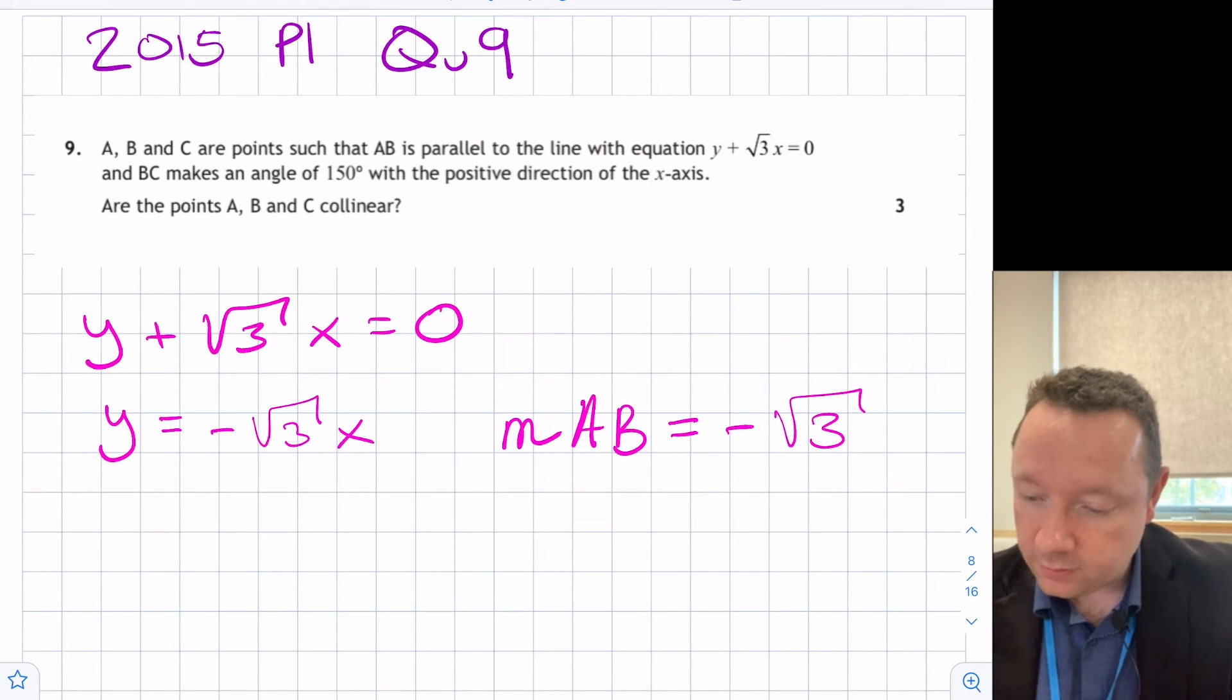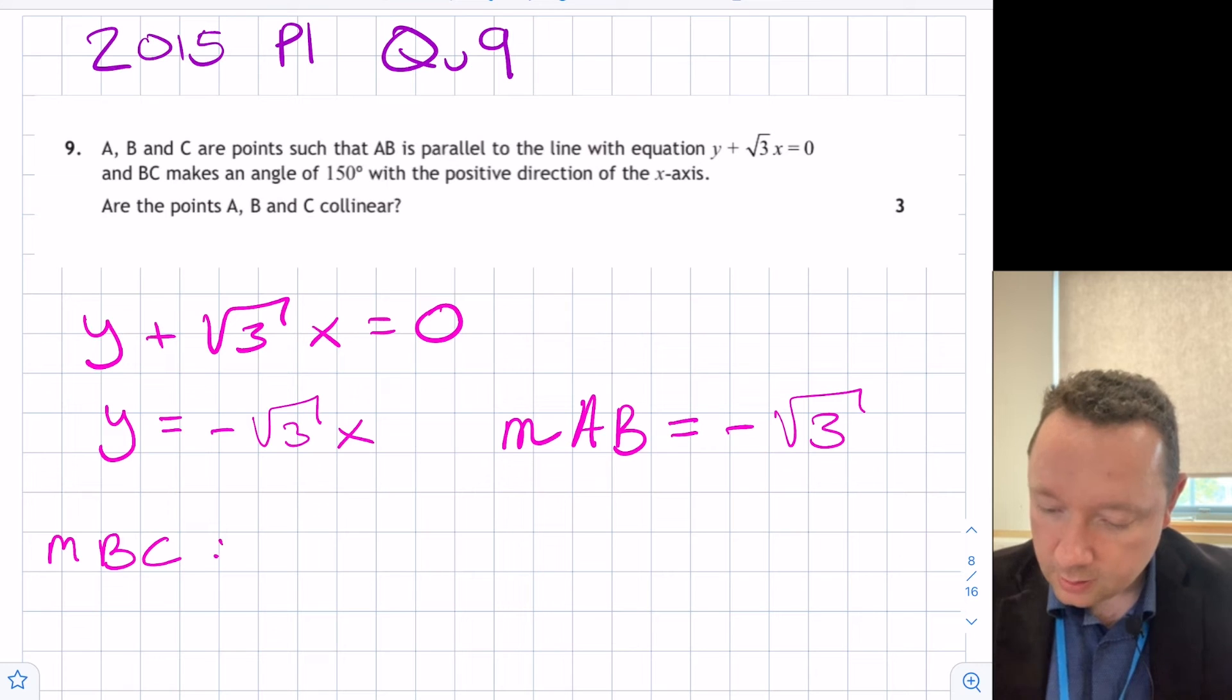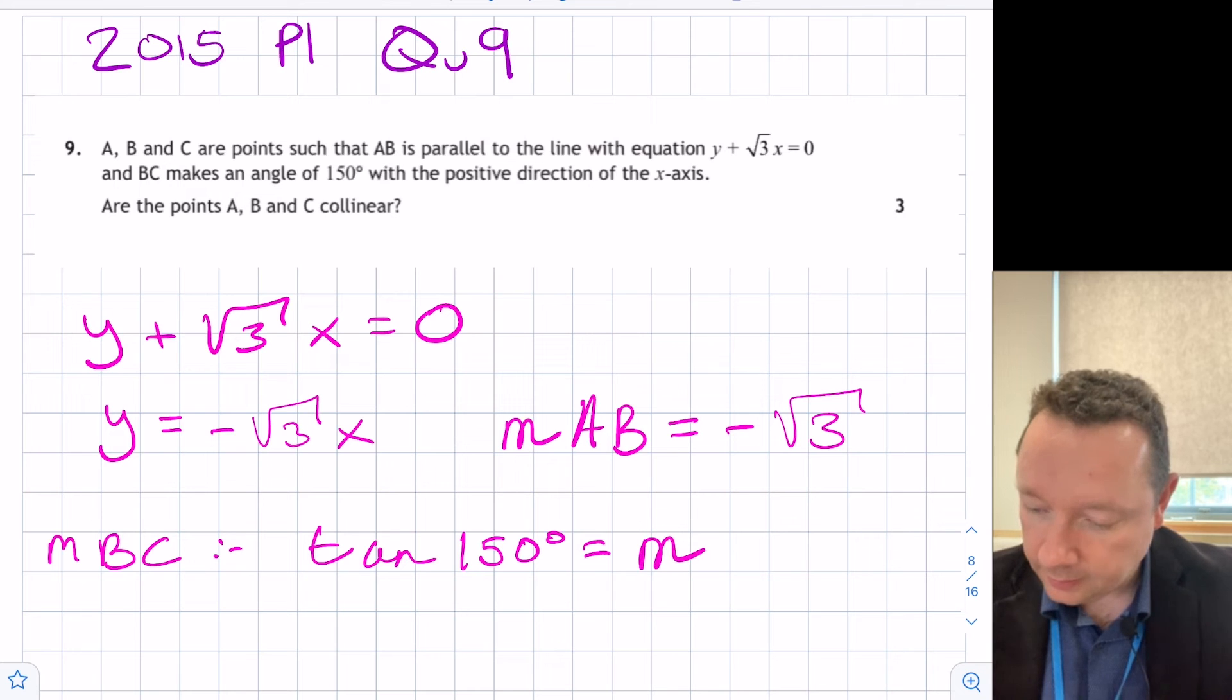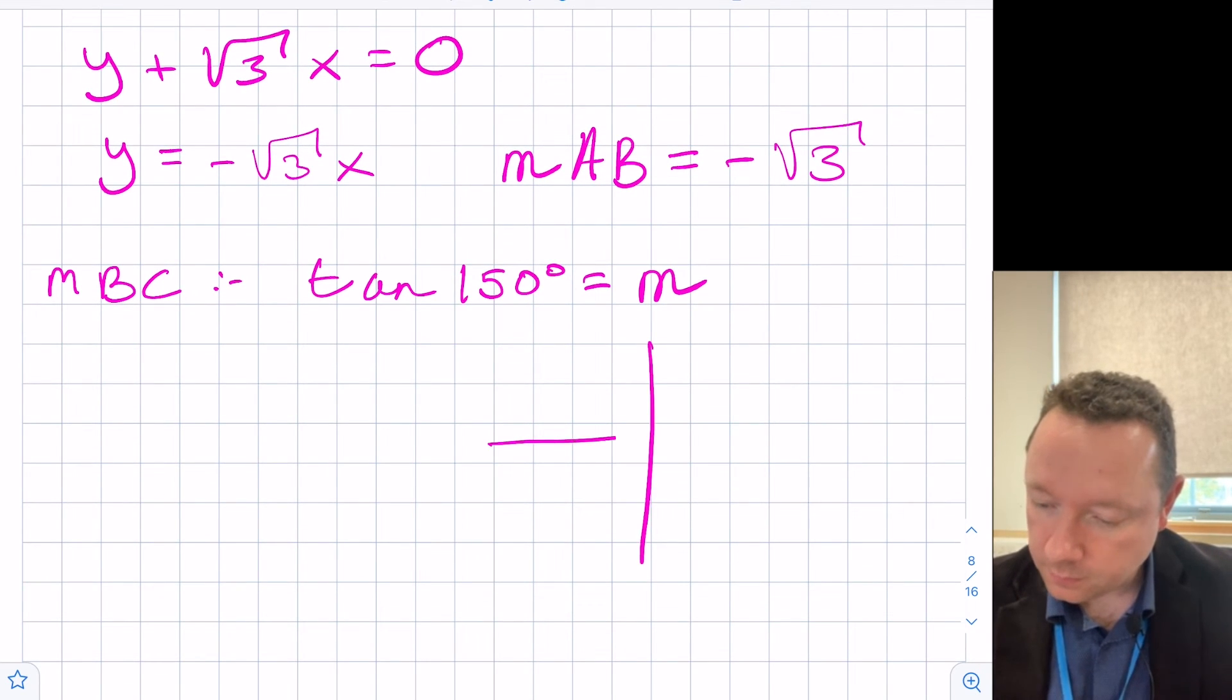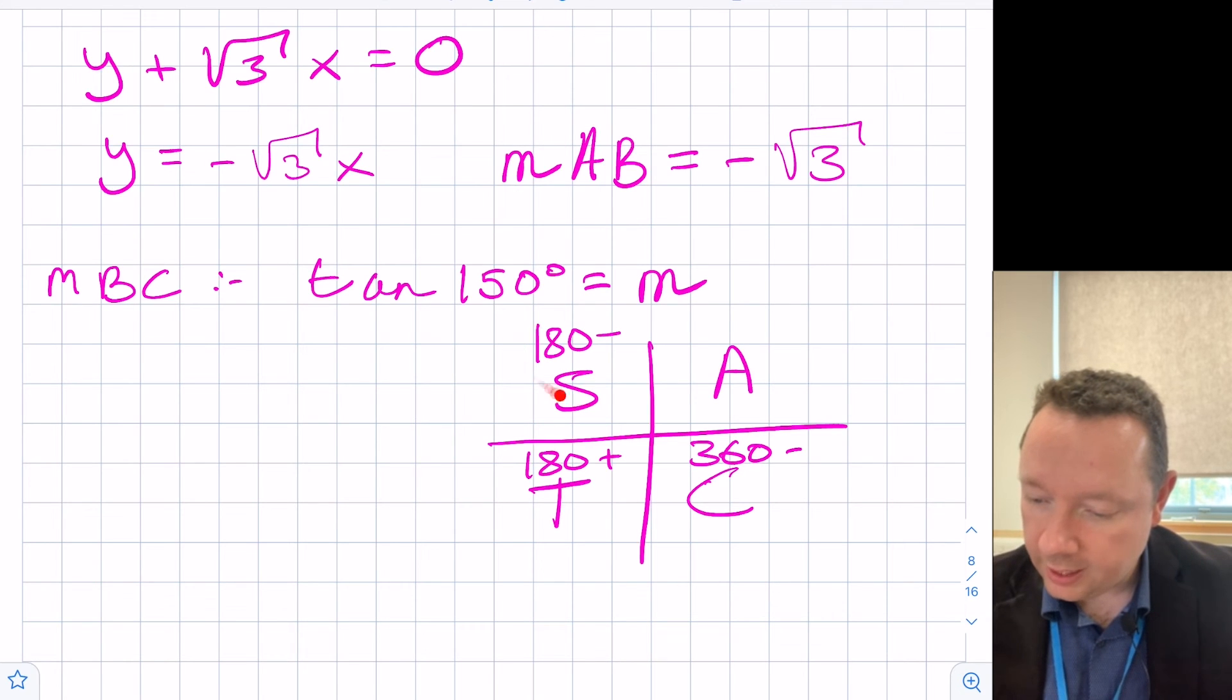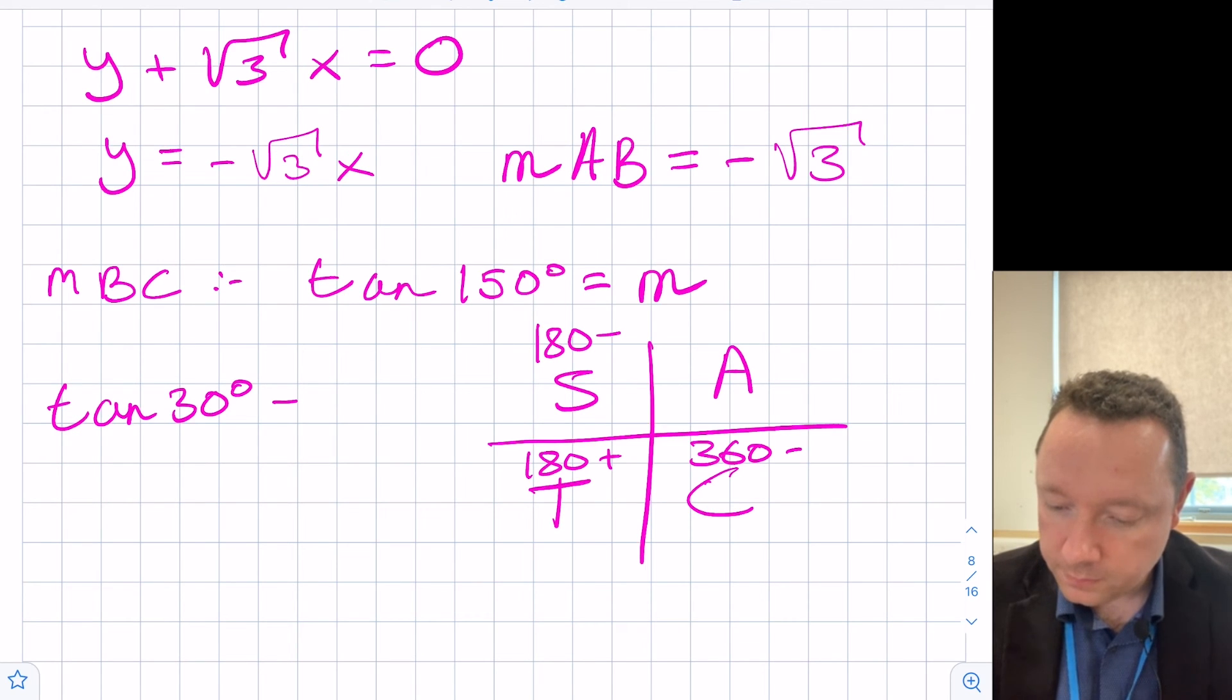The second part says BC makes an angle of 150 degrees. So looking at the gradient of BC, we've got tan 150° is equal to our gradient. Now, 150 degrees is not an exact value, but it is related to an exact value. So if we draw our CAST diagram, then that's 180 minus, 180 plus our angle, and 360 minus. If we look at this one here, 180 - 150 is 30. So it's related in that point. So if we work out tan 30, well, tan 30° is an exact value: 1/√3.